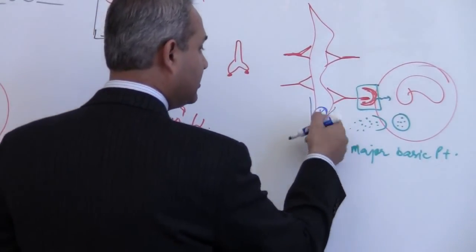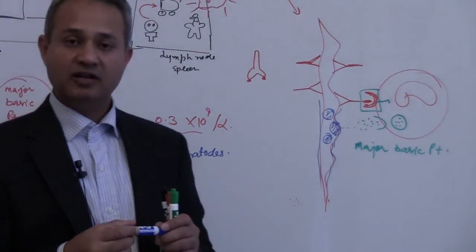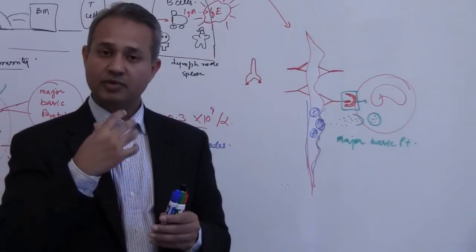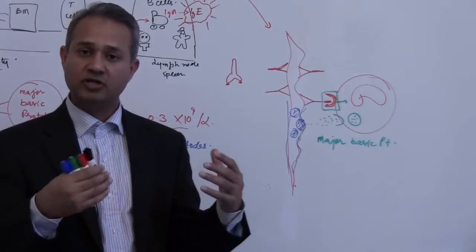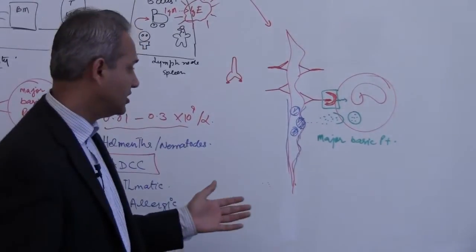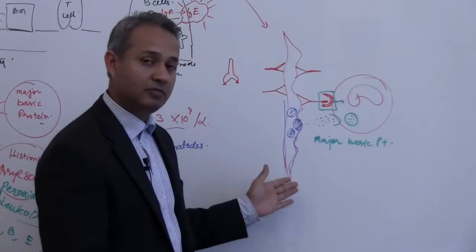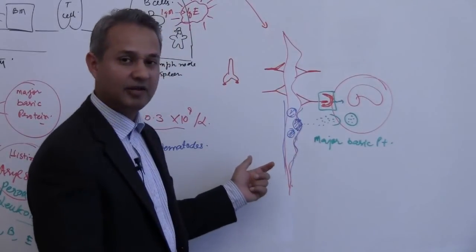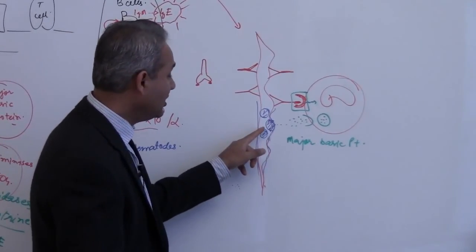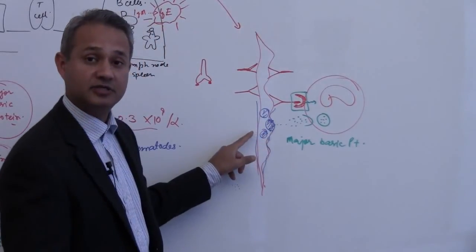And this is, remember these are really very well formed worms. They have a complete GI system, they have a mouth, they have an anus, they have a stomach. So these are really little animals, they are animals anyways. So the major basic protein is going to attack their cuticle.